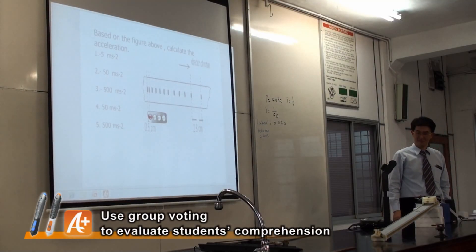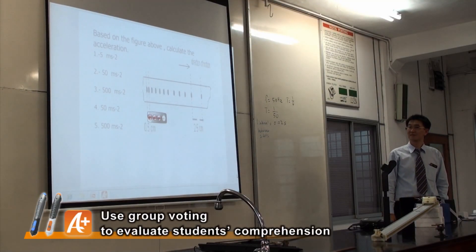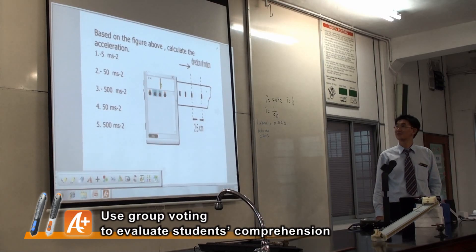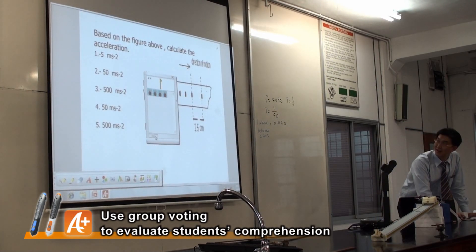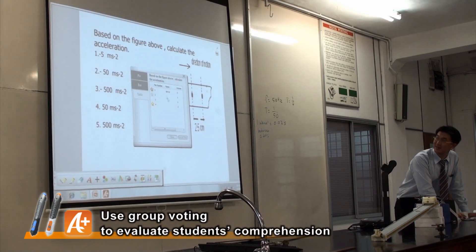For example, AVerPen, it helped the student much because from voting section, the student will get involved together. From voting, they will get to compete to each other, which one is the faster. From the timing they've given by five seconds, so they will try to rush for themselves.